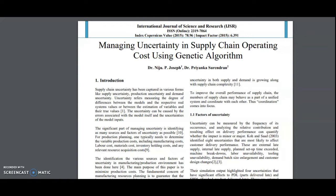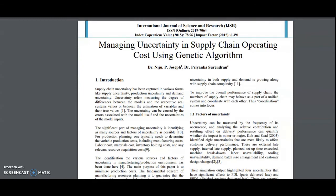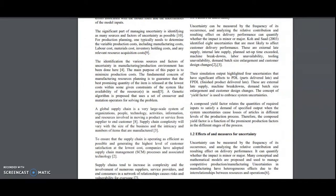Supply chain uncertainty has different forms like supply uncertainty, production uncertainty, and demand uncertainty. What is the meaning of uncertainty? It refers to measuring the degree of differences between the models and the respective real system values. Uncertainties can be caused by errors, exception, and incompleteness. The supply chain operating cost is determined by different types of uncertainties.